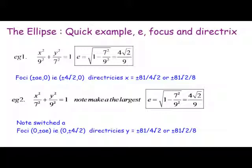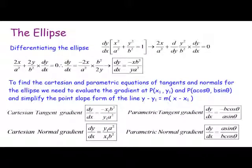How do we find equations of tangents and normals? We need to differentiate the ellipse using implicit differentiation — that's the easiest way — to get an expression for dy/dx, then substitute either the point (x₁, y₁) or the parametric values a cos theta and b sine theta.